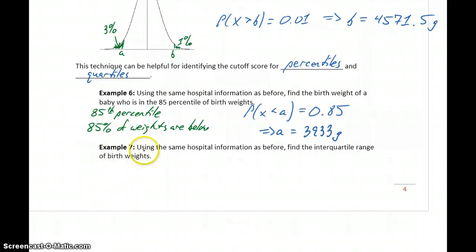So we can also use this to identify the interquartile range for birth weights. So keep in mind the interquartile range is the difference between Q3 and Q1. So we need to find Q3 and Q1. If we take that difference, then we'll end up with our interquartile range.